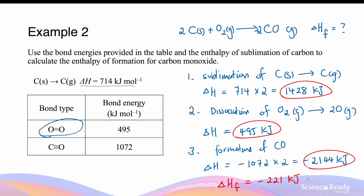If you want to find the molar enthalpy of formation — that is, for one mole of carbon monoxide — you can divide this by 2, which gives us a value of approximately negative 110.5 kJ per mole of carbon monoxide formed.